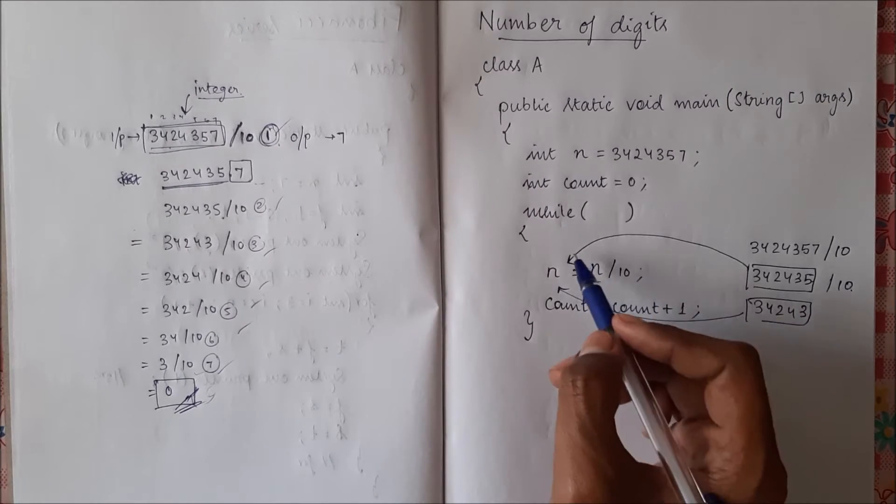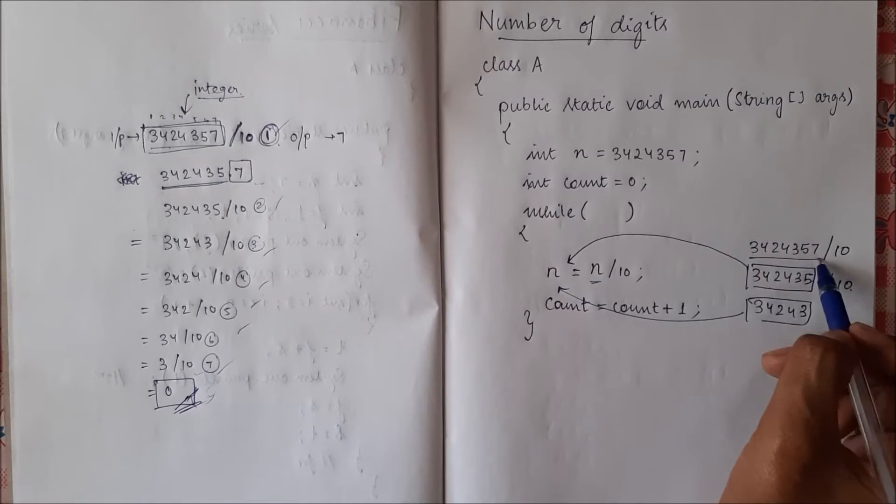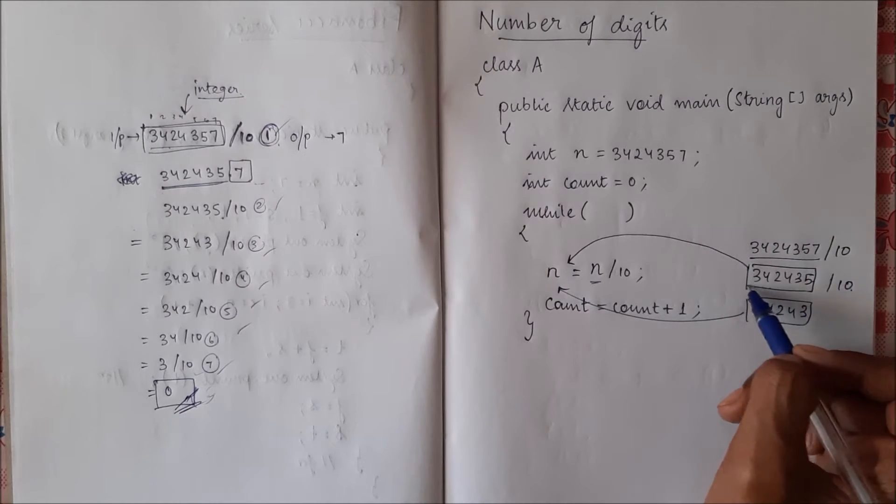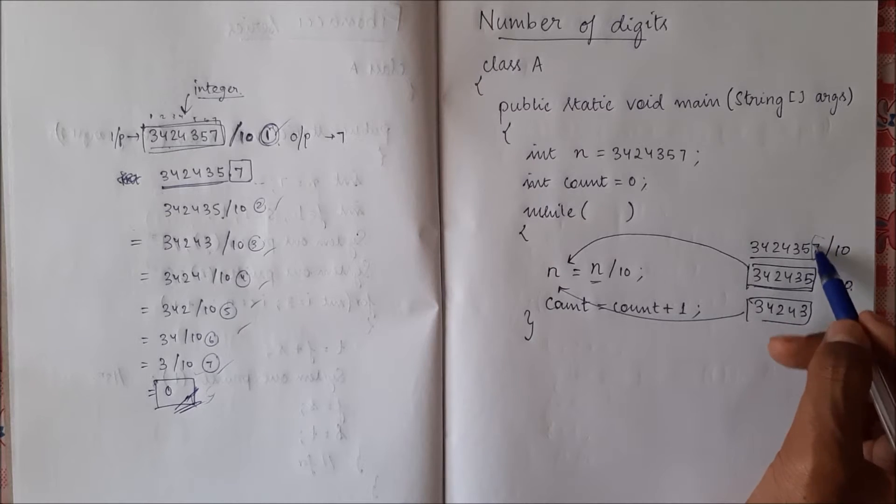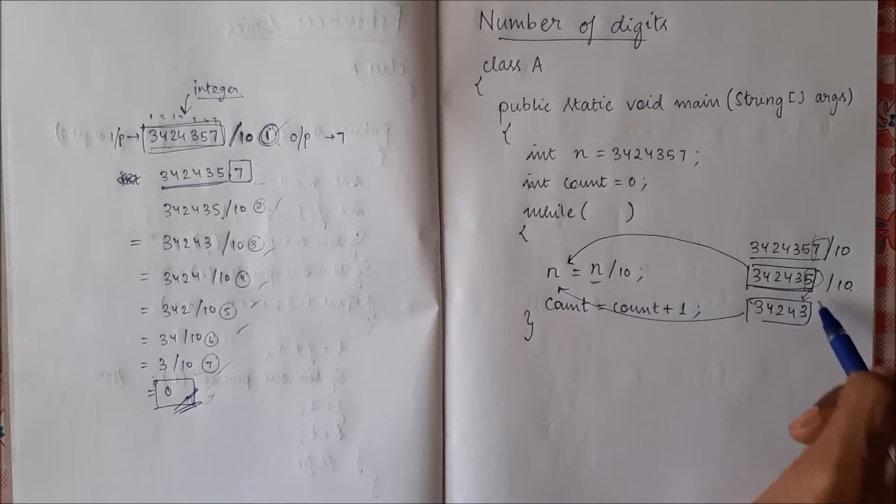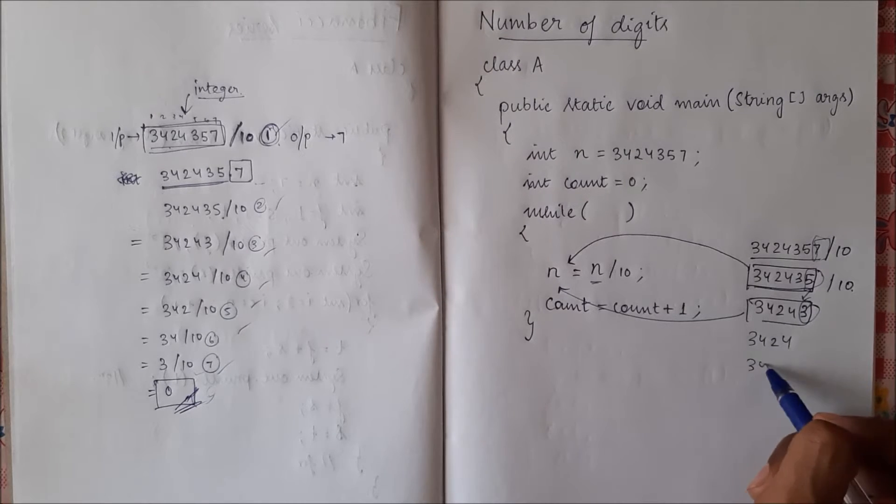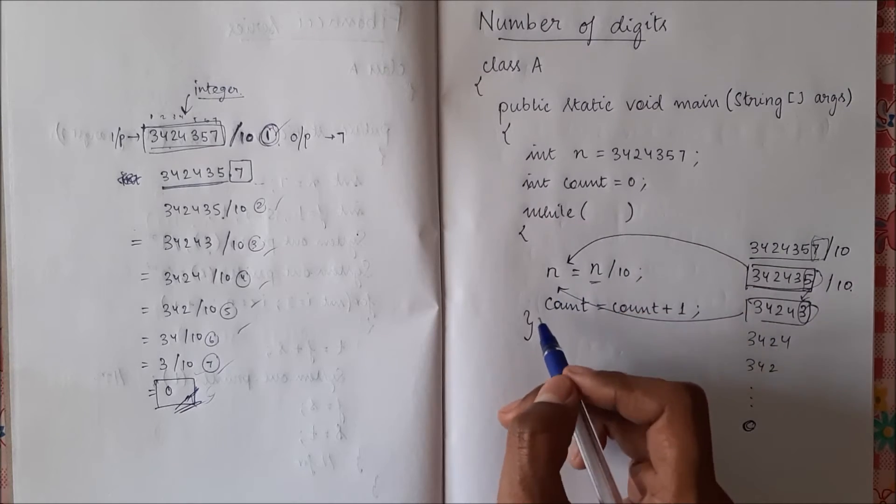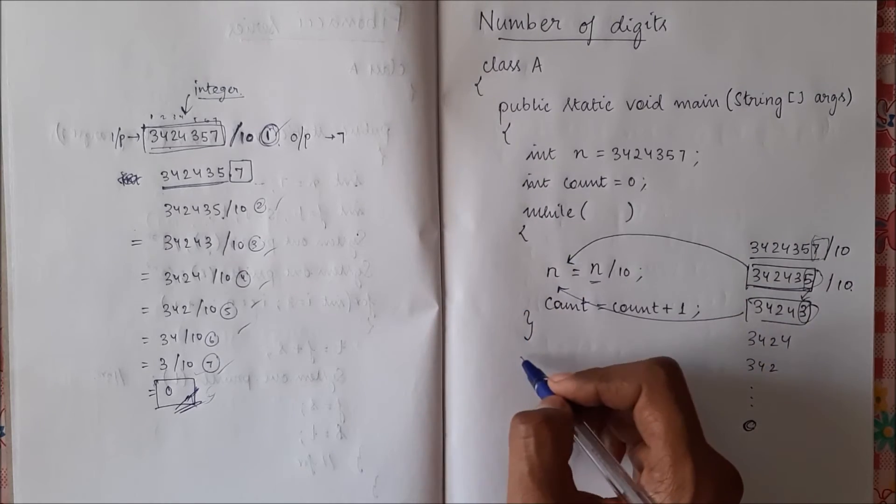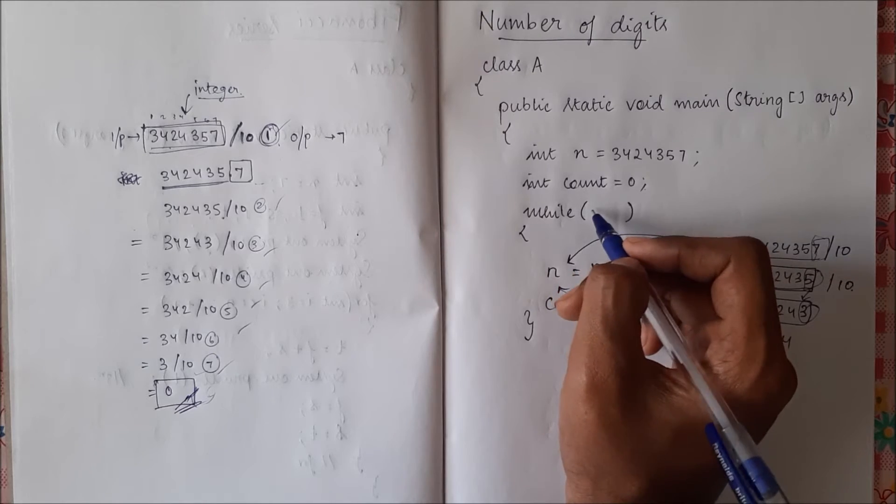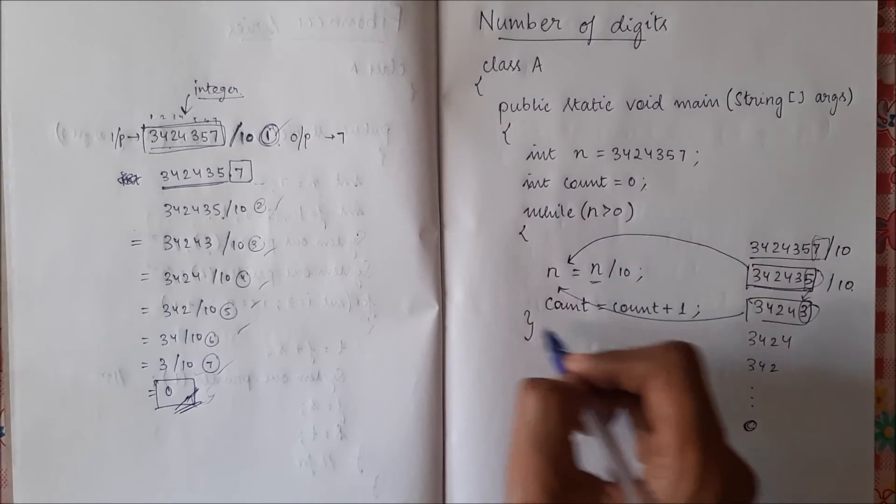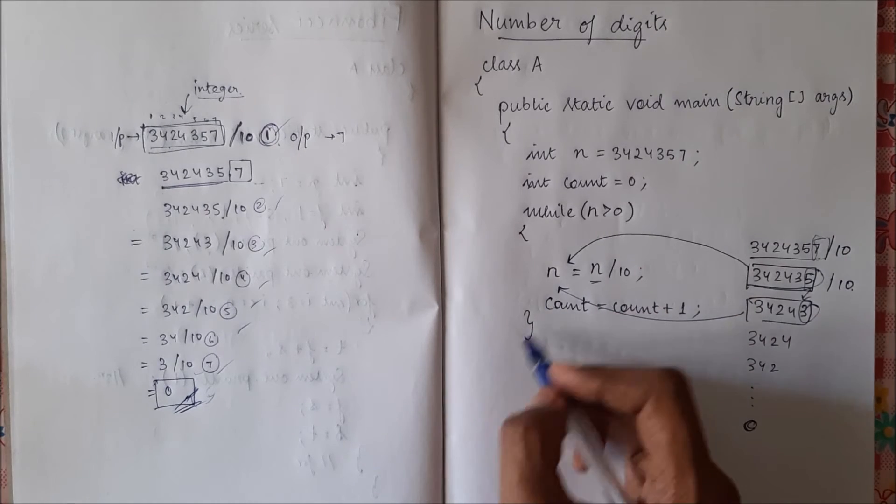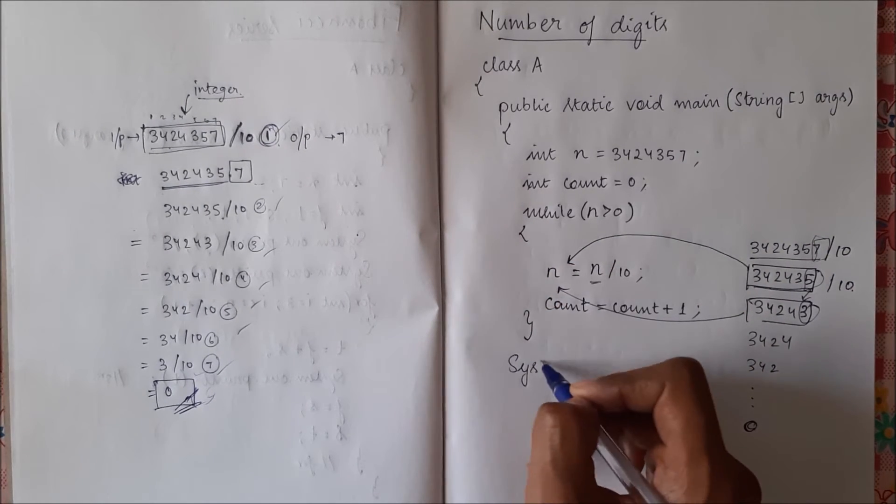And when should it end? See, first n was this, then we divide it by 10 it became like one last digit removed. Now again this digit was removed, now again we divide this digit will be gone. Then again we'll divide and finally it will arrive to zero. So finally n will become zero, so when n is zero we have to come out of the loop. So that will be our condition: while n is greater than zero our loop should run. When it becomes zero should come out and then we'll print our output.